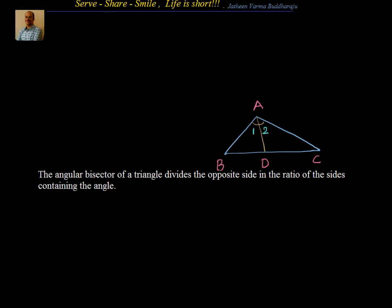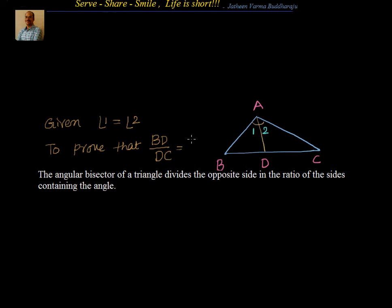Let's write down what is given to us. Given: angle 1 is equal to angle 2. To prove: BD divided by DC is equal to AB divided by AC. This is what is given to us and this is what we have to prove. Now the idea is to leverage the basic proportionality theorem.